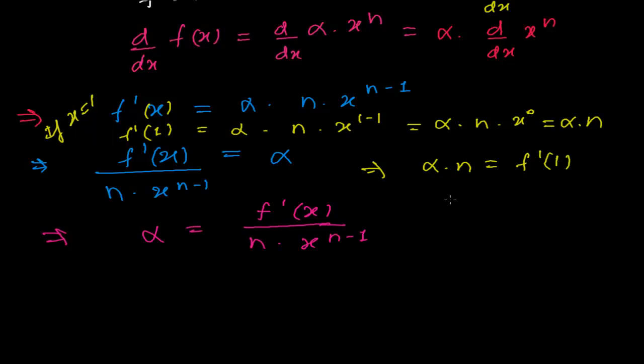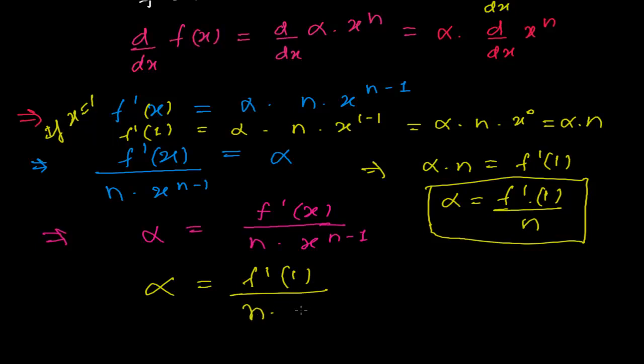So simply what we will get, alpha is equals to f'(1) divided by n. We proved it, what we need. So here also, if you want to prove here, that is f'(1), if you insert here in x form, then it will be n times - in the function, if you plug the value of 1, then it will be simply n times 1 minus 1. That is f'(1), the derivative of 1, because x to the power 0 is equals to 1.